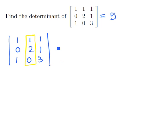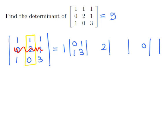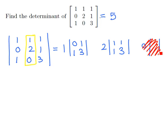Expanding along that second column means we're going to have 1 times some subdeterminant, a 2 times a subdeterminant, and a 0 times a subdeterminant. For the element 1, if we cross off the row and the column that contains the 1, we obtain the submatrix 0, 1, 1, 3. For the element 2, if we cross off the row and the column that contains the element 2, we obtain the submatrix 1, 1, 1, 3. And for the element 0, who cares, because it's 0 times a number.